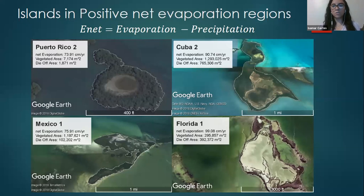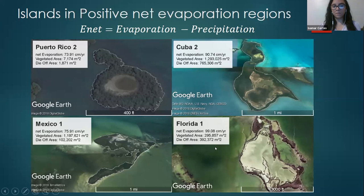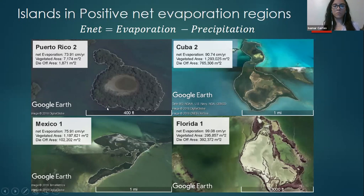What we're looking at is the net evaporation rate — how evaporation minus precipitation, which is what E-NET stands for here, affects the soil stressor balance within mangrove island systems. All of these areas are in positive net evaporation zones, meaning evaporation is greater than precipitation. As you increase the evaporation-to-precipitation ratio, you increase the soil stressor concentration, and at a certain point mangroves begin to die off, which you see as an example in this hypersaline lagoon — that large salt flat area. They're all located in positive net evaporation regions.